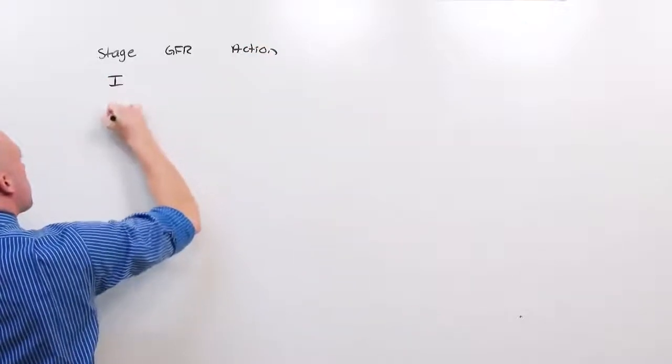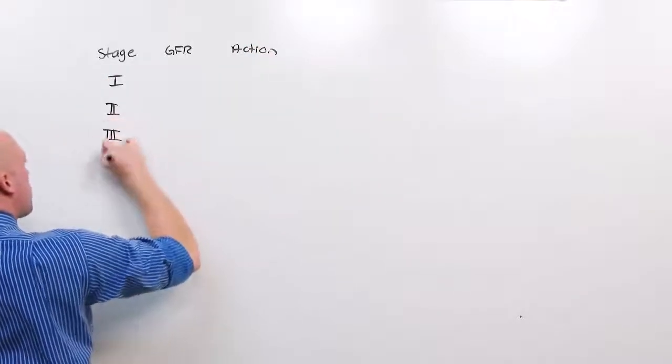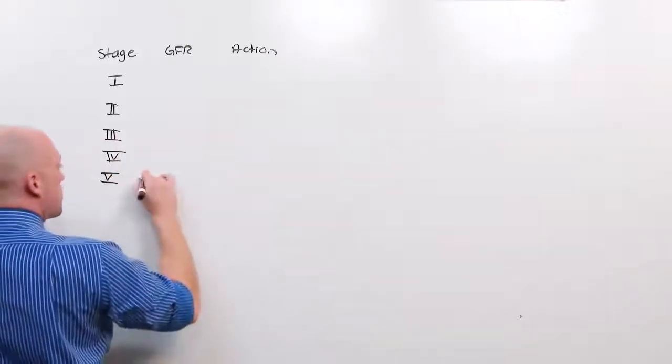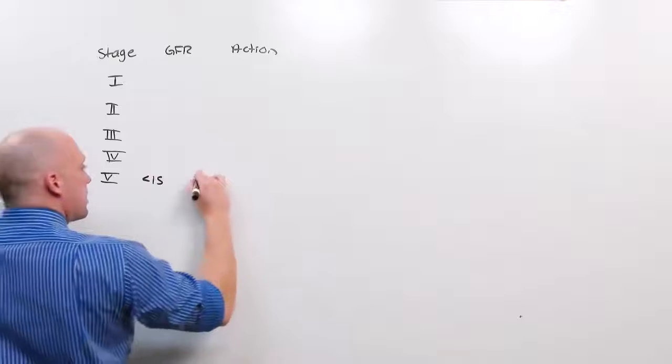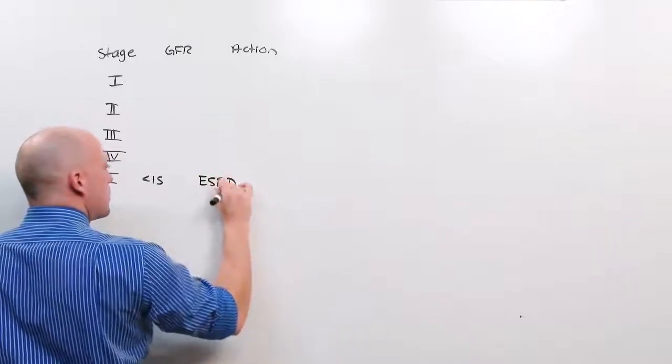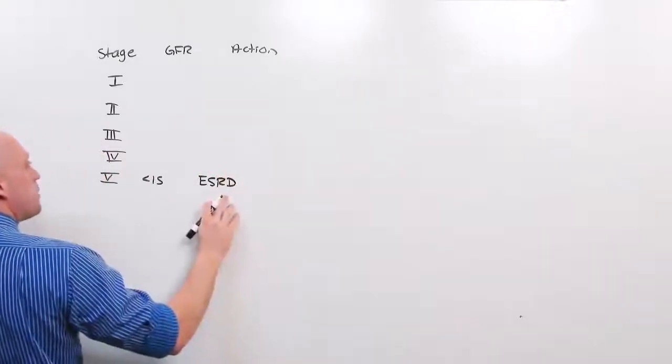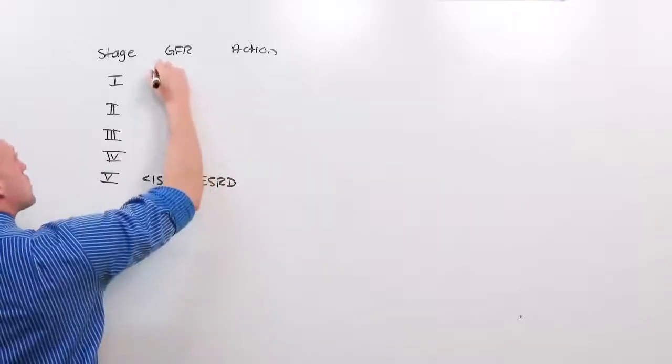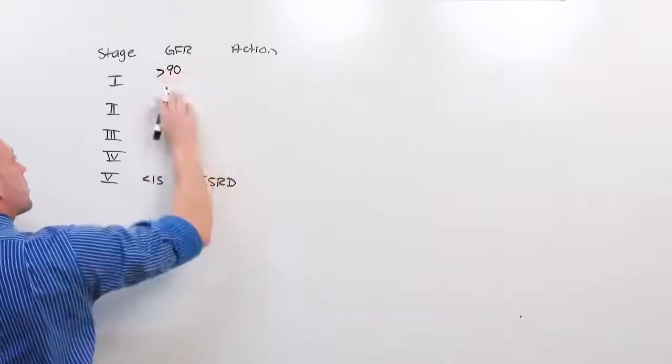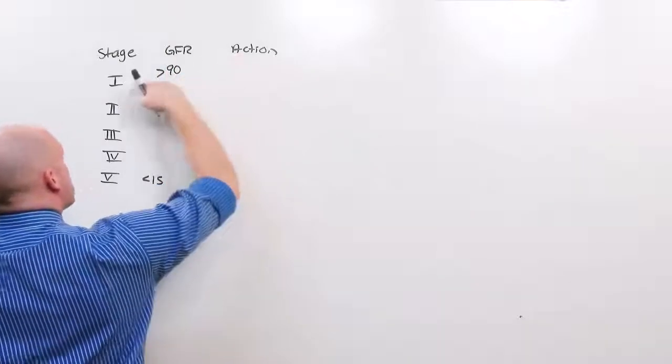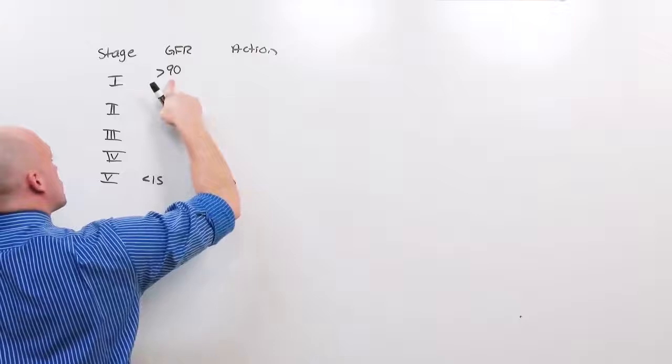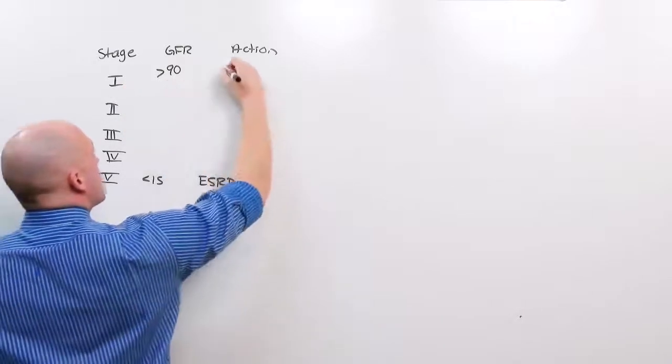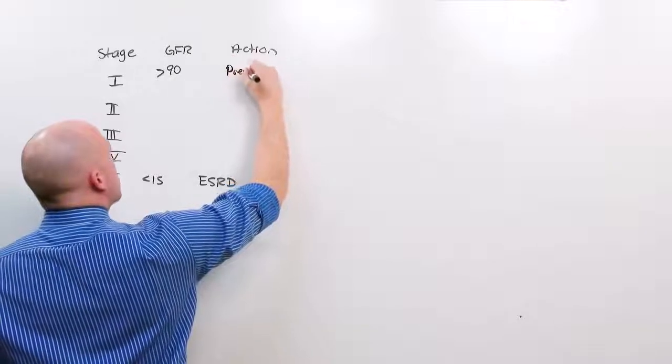There are five stages. With the fifth stage being less than 15 and essentially end stage renal disease. These patients are essentially anuric for all intents and purposes. Normal GFR is greater than 90. And that means CKD stage 1. So if they have a normal GFR and any evidence of CKD, then they've got stage 1. And the action here is to prevent progression.